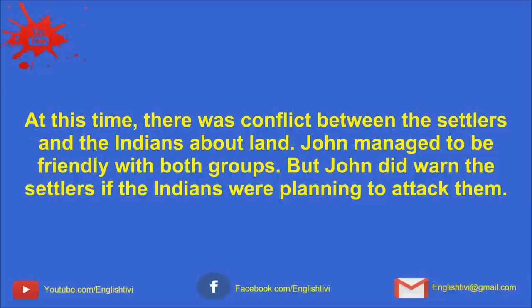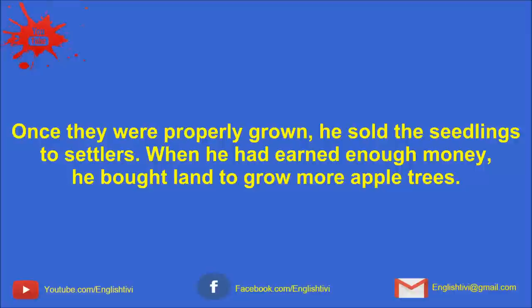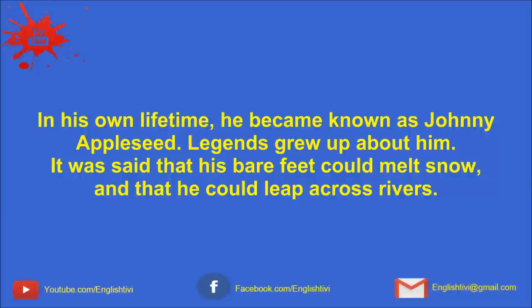He never bought new clothes, but wore whatever old clothes came his way. But he was always welcome at a settler's cabin. John was good at clearing land, telling stories, and growing apples. He liked children, and children liked him. He was a religious man, and would read to the settlers about God and living together peacefully. At this time, there was conflict between the settlers and Indians about land. John managed to be friendly with both groups, but John did warn the settlers if the Indians were planning to attack them. Every fall, John went east to gather more apple seeds. He would then go farther west and find some empty land to plant his seeds.